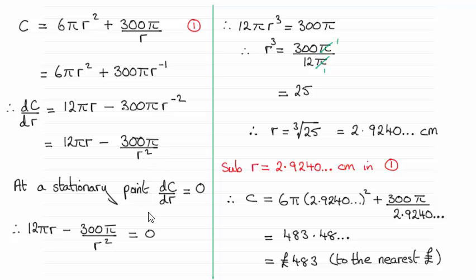At a stationary point, the gradient would be 0, so dc/dr = 0. I've put this equation equal to 0. Next, add 300π/r² to both sides and multiply through by r². That gives 12πr³ = 300π. Divide through by 12π, the π's cancel, and you're left with r³ = 300/12, which is 25.